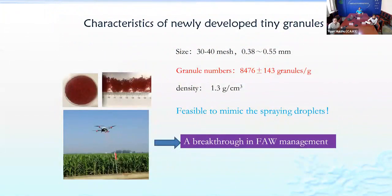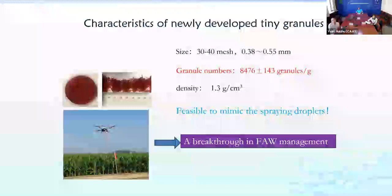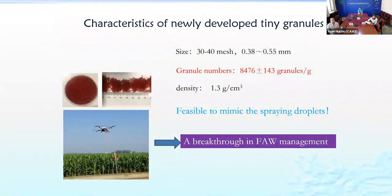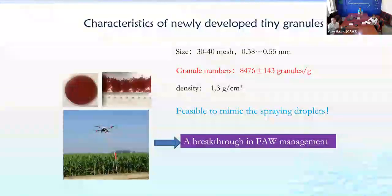Here are the characteristics of the newly developed tiny granules. They are sorted by sieve and the size of granules is 30 to 40 mesh. The granule number is more than 8,000 granules per gram, making it feasible to mimic spray droplets.